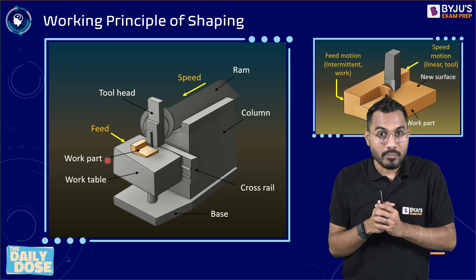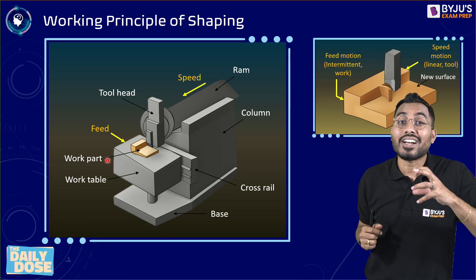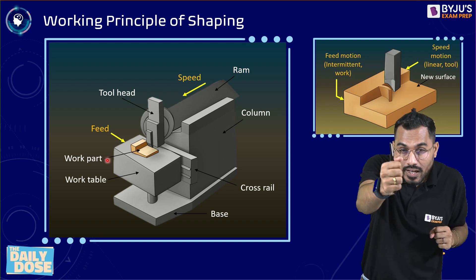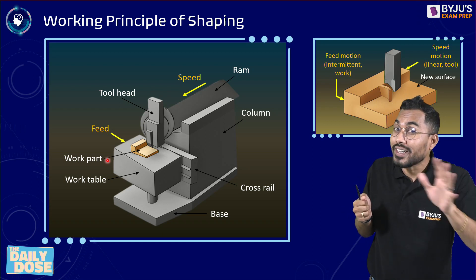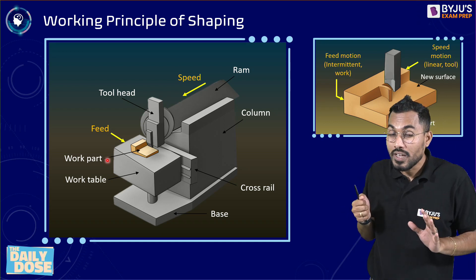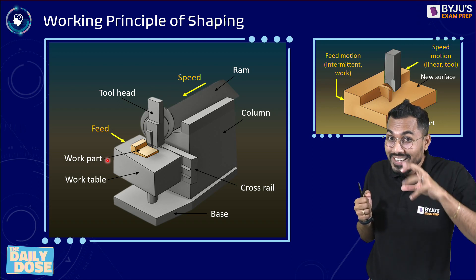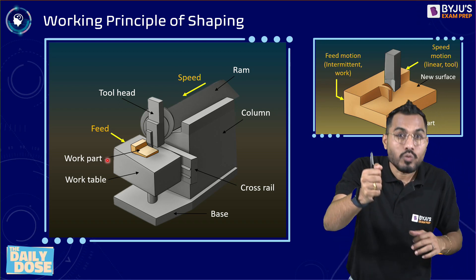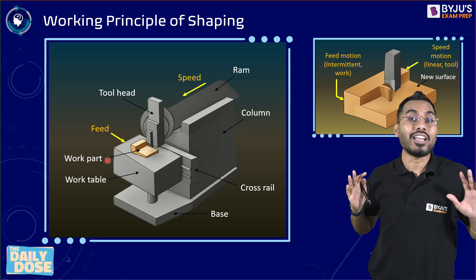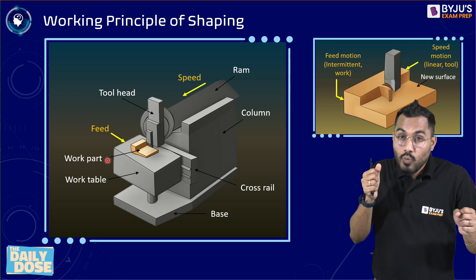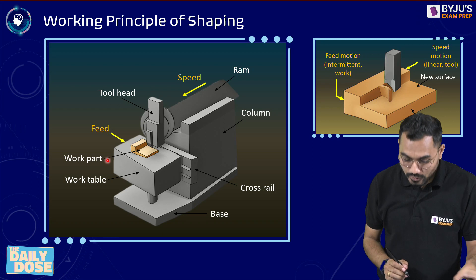When the tool is moving in the forward direction, it is in contact with the workpiece and performing the machining operation — this is called the cutting stroke. When the tool is coming back, it is the idle stroke; the tool is not in contact with the workpiece. One complete stroke consists of one cutting stroke plus one idle stroke.